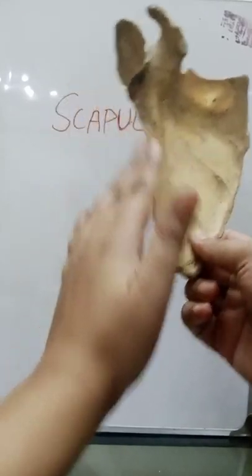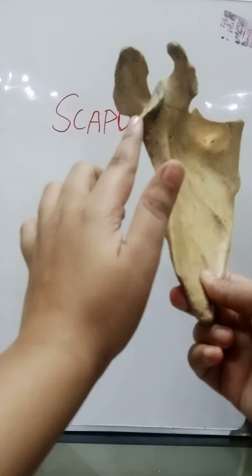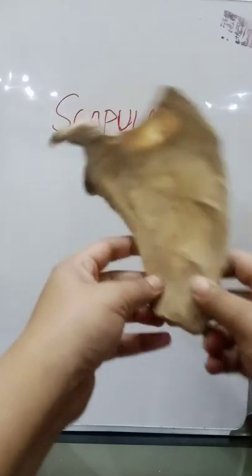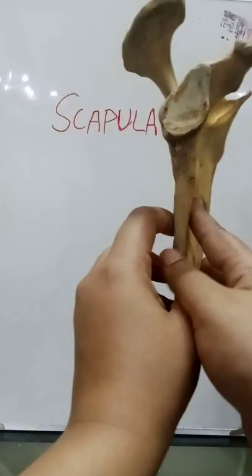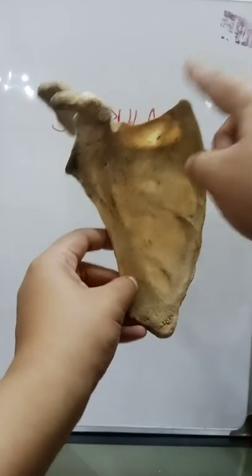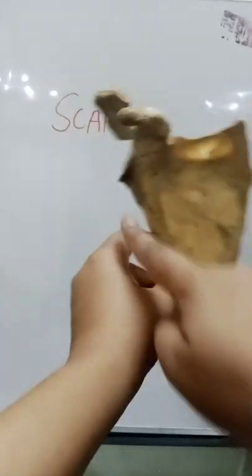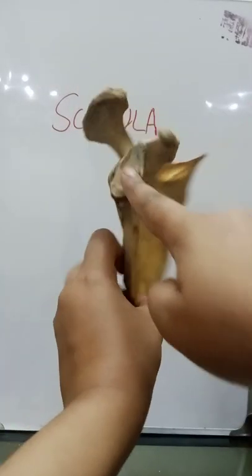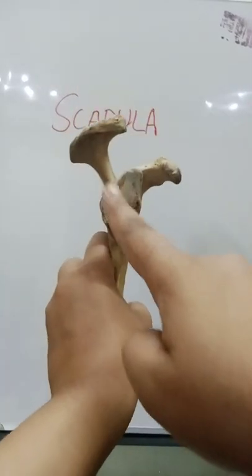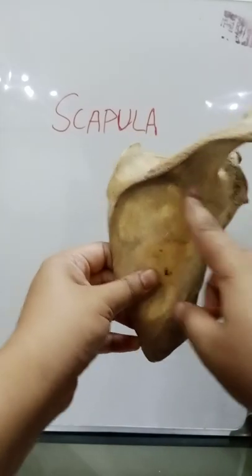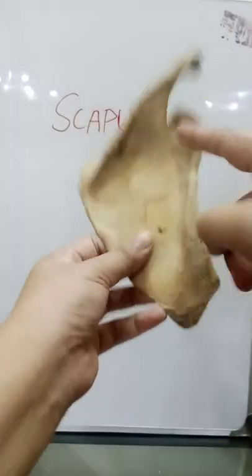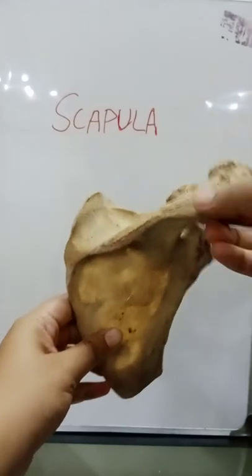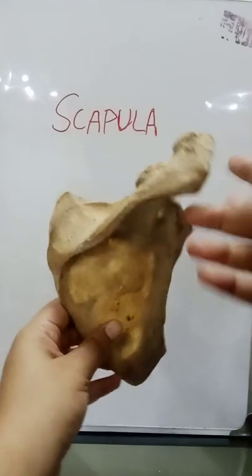The lateral border has an infraglenoid notch on the upper part, and the medial border is the third. There are three angles: the superior angle, inferior angle, and lateral angle, which has the glenoid cavity or fossa. There are three processes: the spinous process, having three borders and two surfaces, and the acromion process.